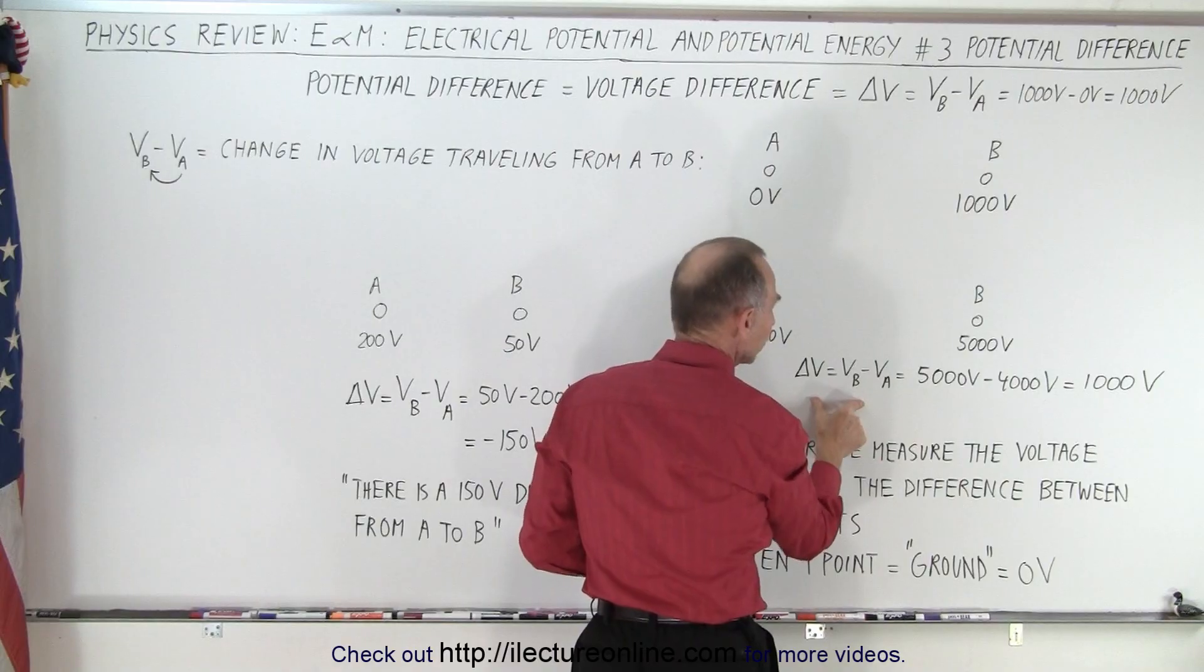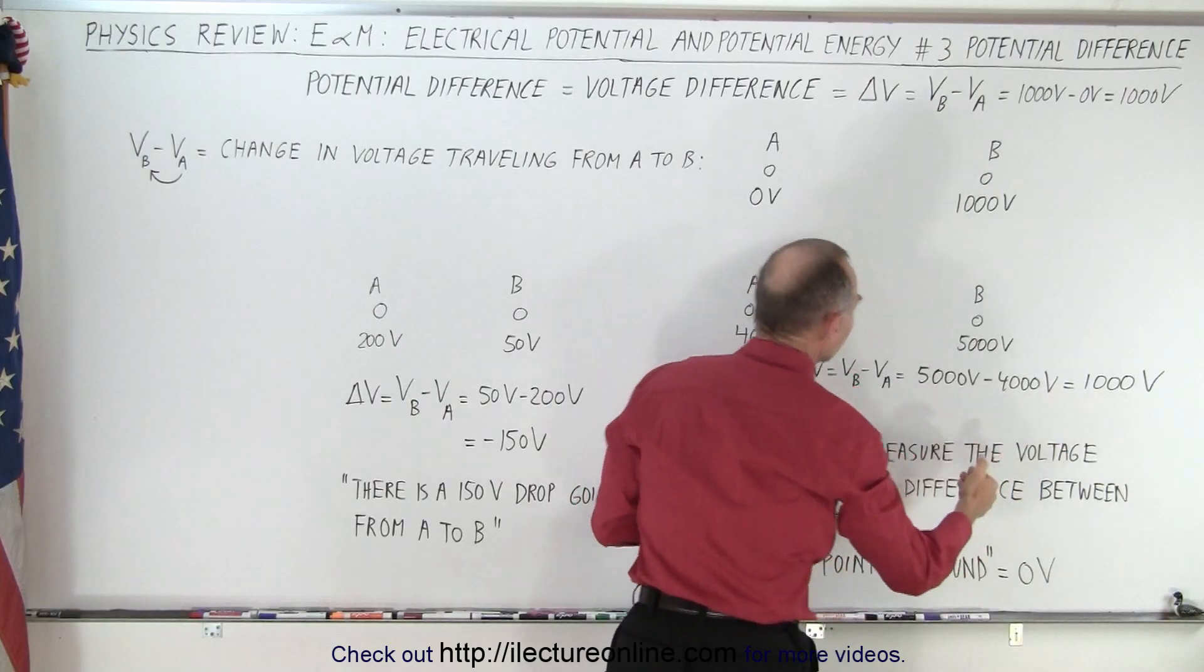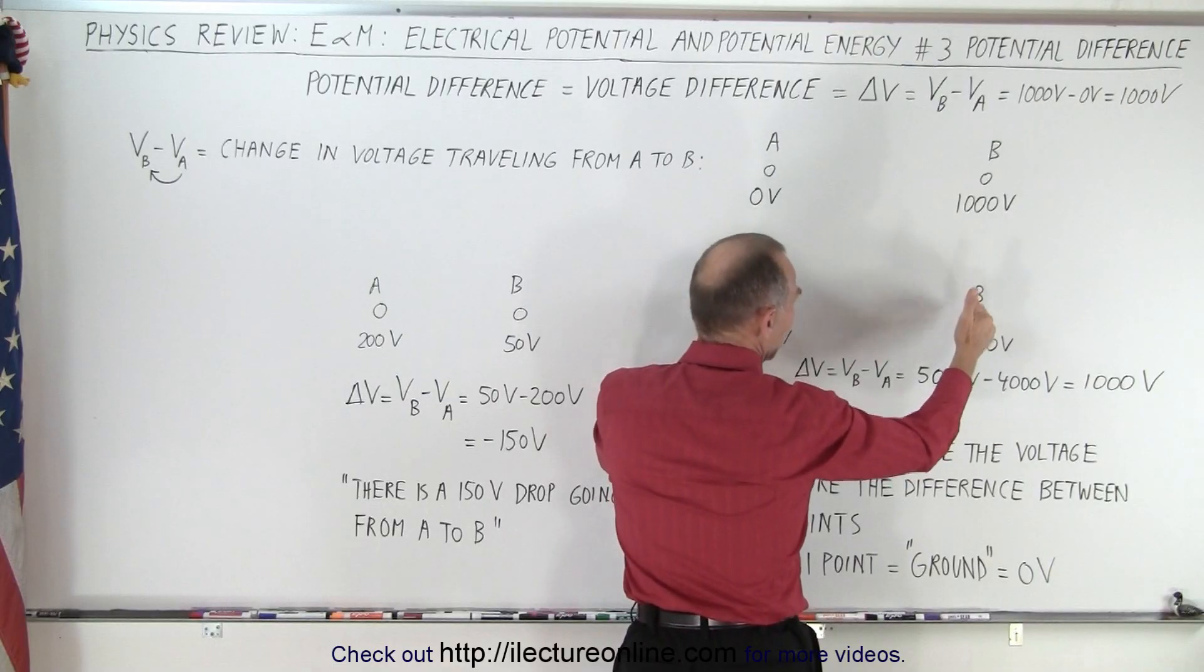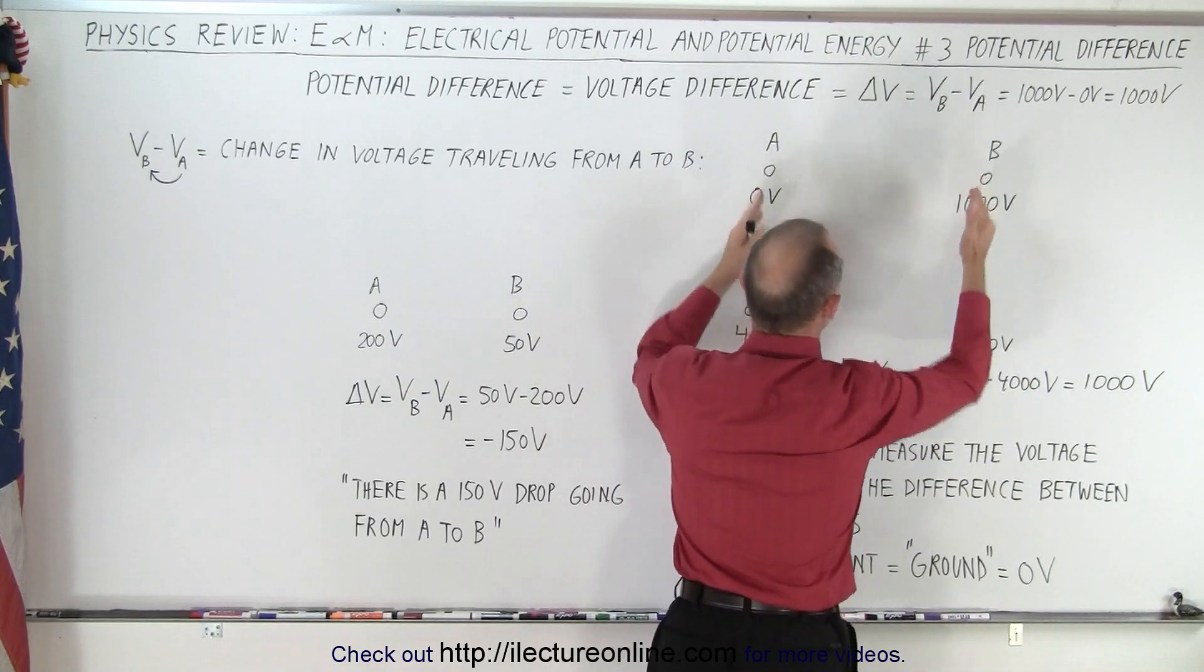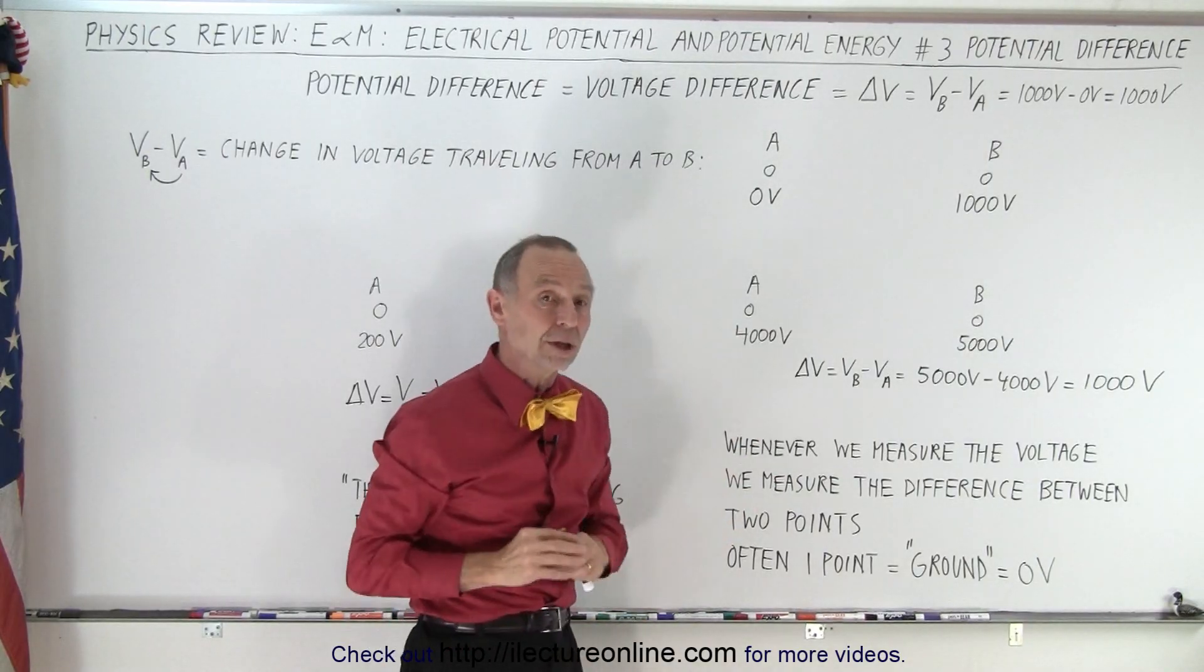So the difference in voltage, the difference of potential, is 5000 minus 4000 or a thousand volts. So the voltage difference or potential difference between A and B here is exactly the same as it is there. It's only the difference that matters, not what the actual values are.